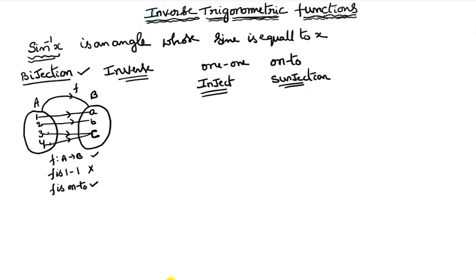Now is f an onto function? Yes, it is an onto function, because for every element in B there is a pre-image: a has pre-image 1, b has pre-image 2, c has pre-image 3 or 4. But since f is not one-one, f is not a bijection — a bijection requires both one-one and onto.